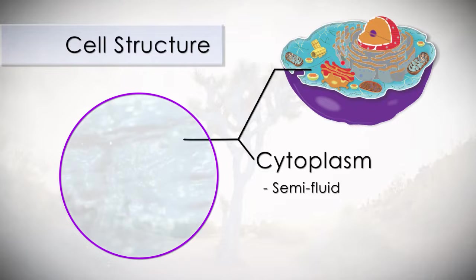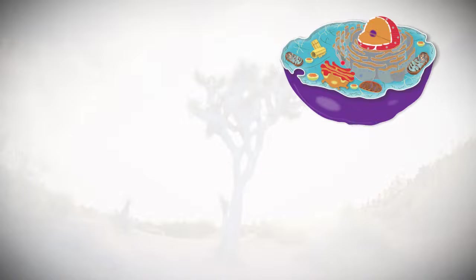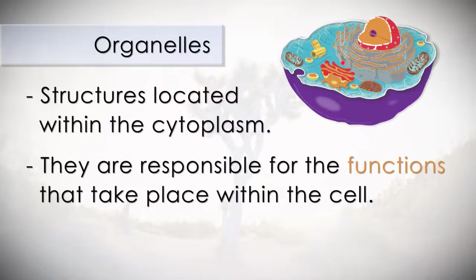Cytoplasm is a semi-fluid inside the cell. Like our blood, it is where all chemical reactions take place in the cell. Organelles are structures located within the cytoplasm. The organelles are responsible for the functions that take place within the cell.